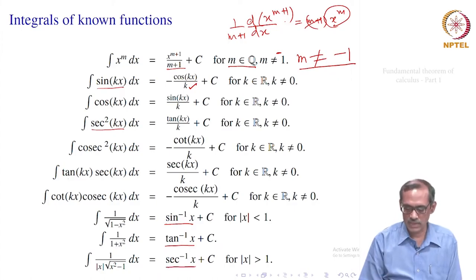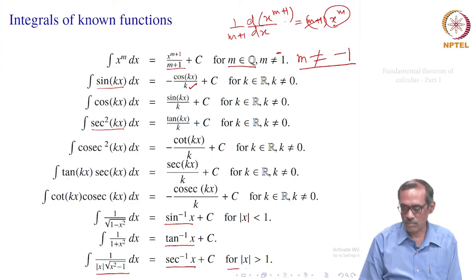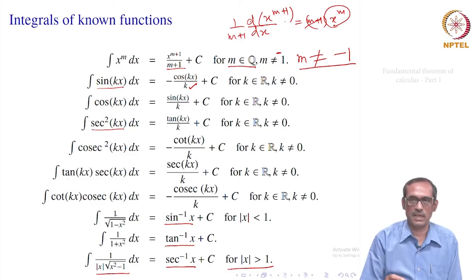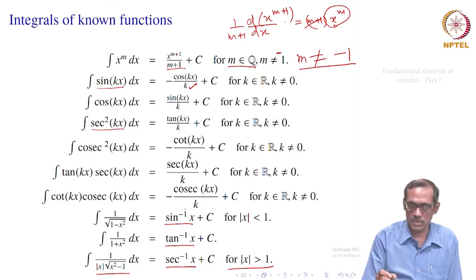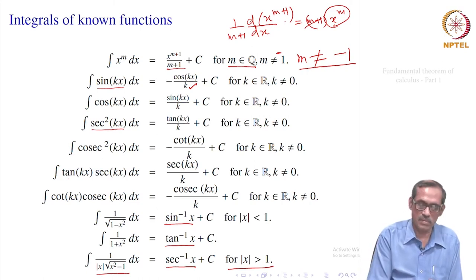Similarly, sec⁻¹(x) has derivative 1/(|x|·√(x² − 1)), so the integral of 1/(|x|·√(x² − 1)) dx equals sec⁻¹(x) for |x| greater than 1. These are all the formulas which will be helpful for us while evaluating integrals. If you do not remember some of them, go back to the derivatives and then rewrite the integrals from that information.